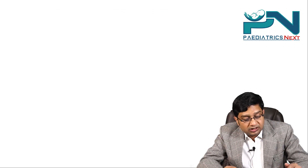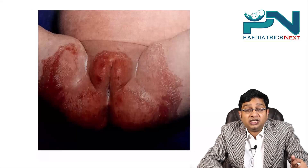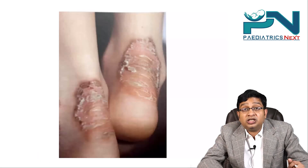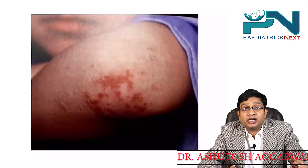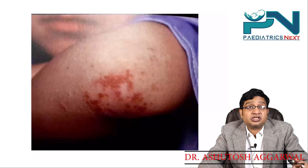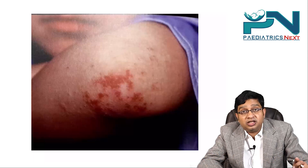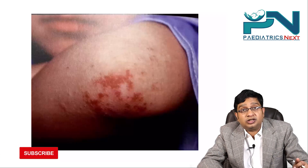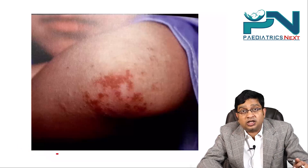Images are shown: involvement of the perineal area, involvement of the lower limbs, and lesions on the elbow — these are features of zinc deficiency. This concludes the discussion of MCQs on rickets and zinc deficiency. Thank you all.